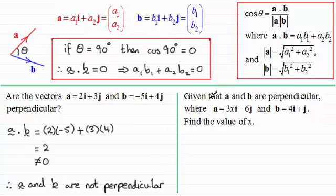Now in this last example we're given that a and b are perpendicular, where a is equal to 3xi minus 6j and b is 4i plus j. And we've got to find the value of x.